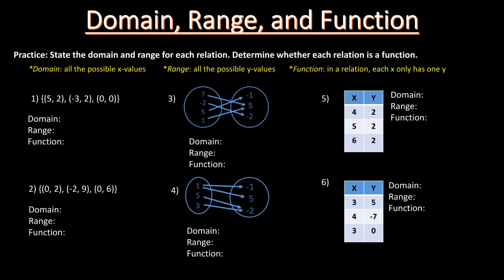Let's do some practice about domain, range, and function. State the domain and range for each relation, and then determine whether each relation is a function. Domain is all the possible x-values. Range is all the possible y-values. In a relation, if each x-value has one y-value, then it's a function.